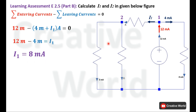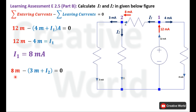We now move to node 2 to calculate I2. At node 2, identifying the entering and leaving currents: 8 mA is entering, while I2 and 3 mA are leaving. Applying Kirchhoff's current law again, we place the entering and leaving currents into the equation. This equation includes I2 as the variable, while the others are constants.